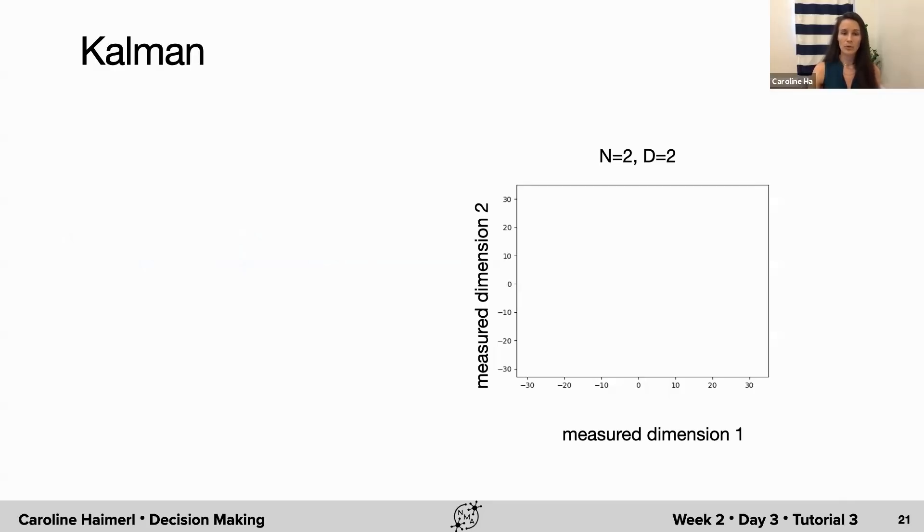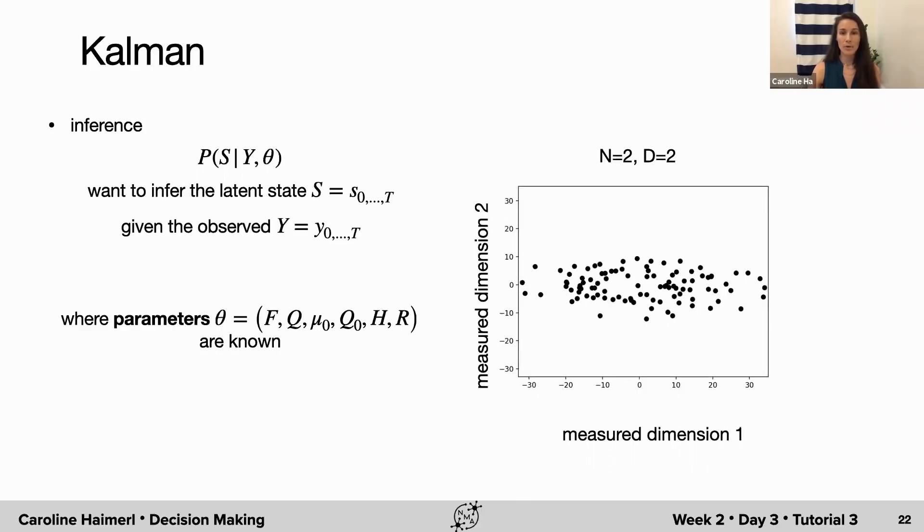For instance, take a recording from a population of neurons. We do not know what they are coding for, but want to infer it from their activity. This process is called inference and has a nice solution formalized by the Kalman filter for the linear dynamical system.